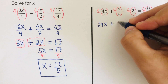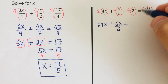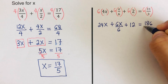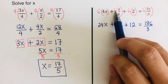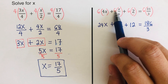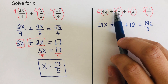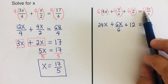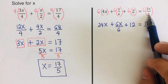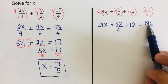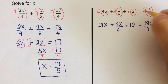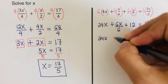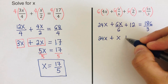Multiplying across: 6 times 4x is 24x; plus 6 times x is 6x over 6; plus 6 times 2 is 12; equals 6 times 31 is 186 over 3. Remember, we only multiply 6 by x — not 6 times x and 6 times 6. And for the right side, we only multiply 6 and 31 to get 186, because the 3 is the denominator with an invisible 1 above it. Simplifying: 24x + 6x/6 = 24x + x, plus 12 = 186/3 = 62.